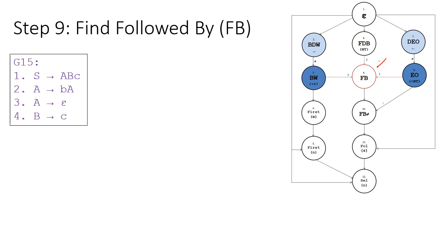Step 9 is the ultimate step, especially when we are trying to find the follow set of A. Remember, rule 3 is a nullable rule and in order to find the selection set for rule 3, we need to find the follow set of A. All steps 6, 7, 8, and 9 are concerned with finding the follow set of A, and step 9 is the ultimate step.